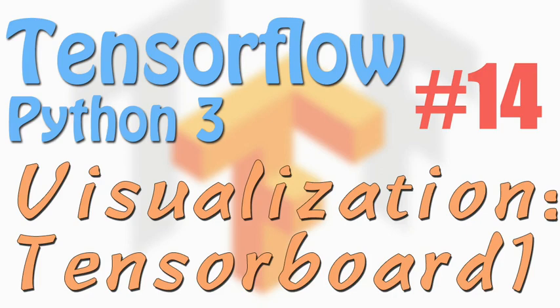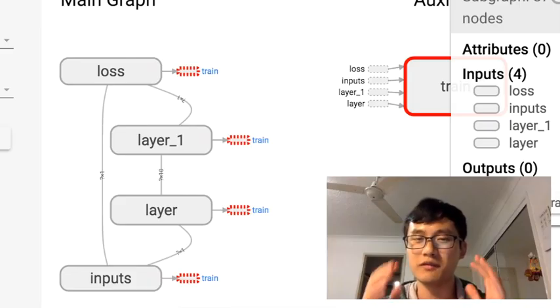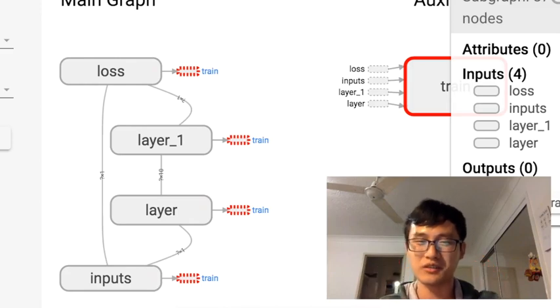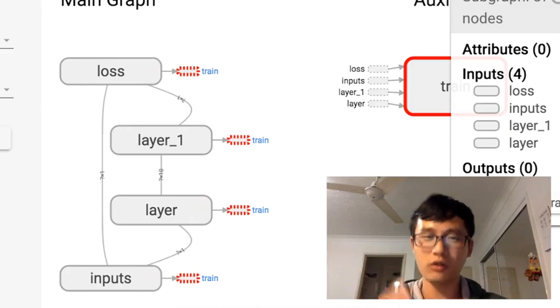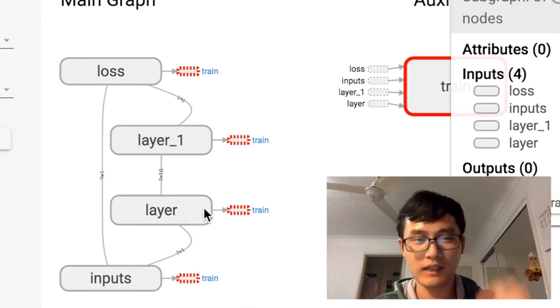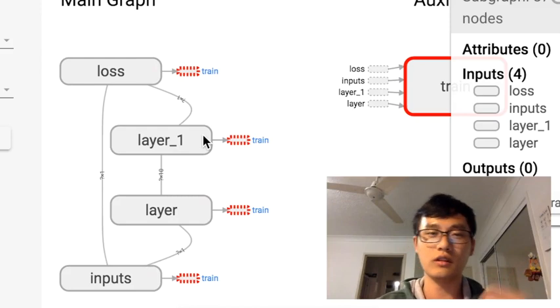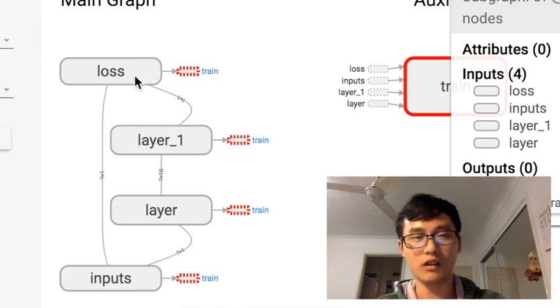Hi everyone, welcome back to TensorFlow's tutorial series. This time we're going to show you a visualization tool that's called TensorBoard. With TensorBoard you can actually show which is your layer, which is your input, which is your output or which is your loss.